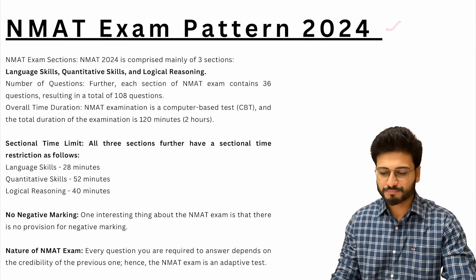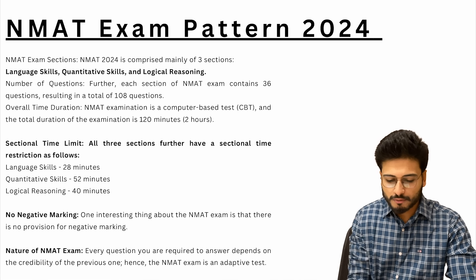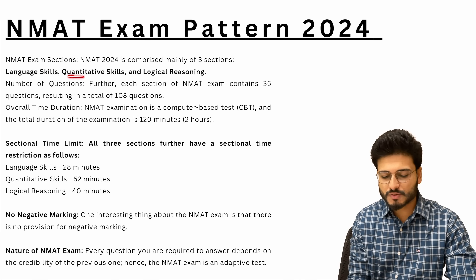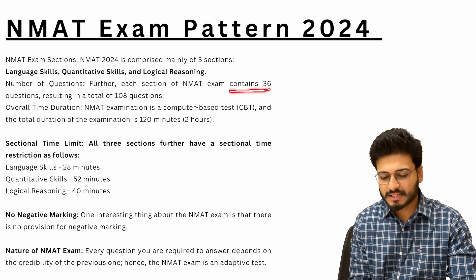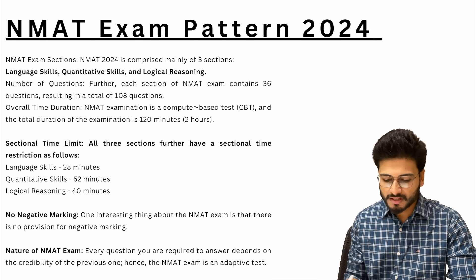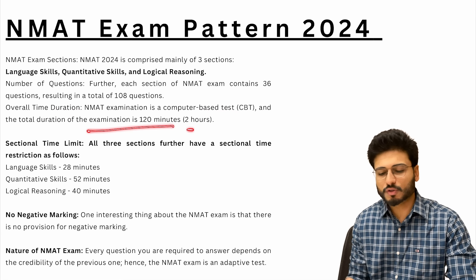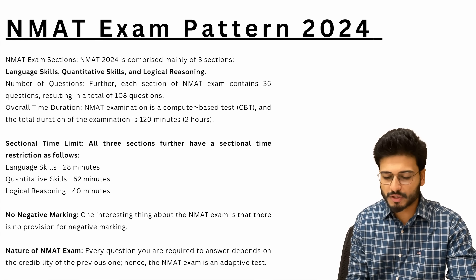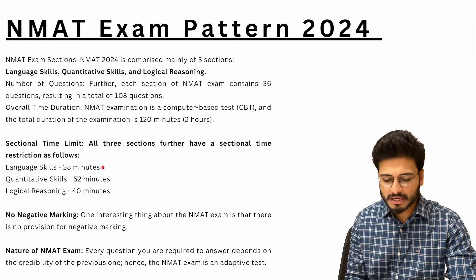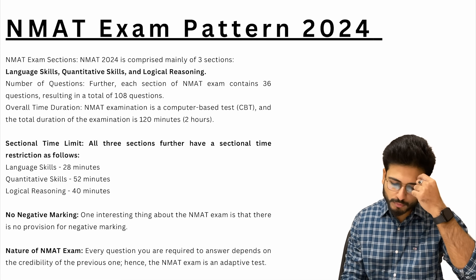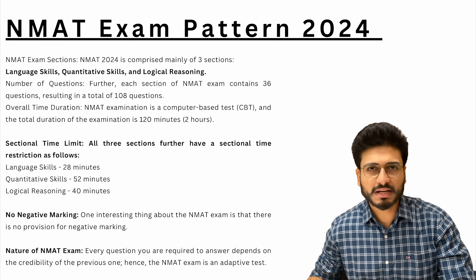First, if we talk about the pattern, there are three subjects: Language Skills, Quantitative Skills, and Logical Reasoning. Each section has 36 questions, making a total of 108 questions. The overall exam time is 120 minutes — that is 2 hours. The sectional time limits are 28 minutes for Language Skills, 52 minutes for Quantitative Skills, and 40 minutes for Logical Reasoning.